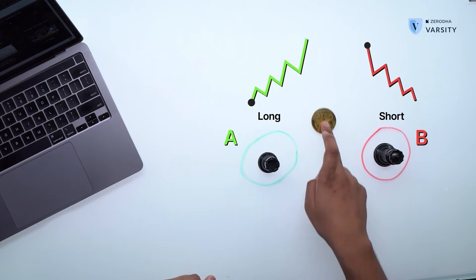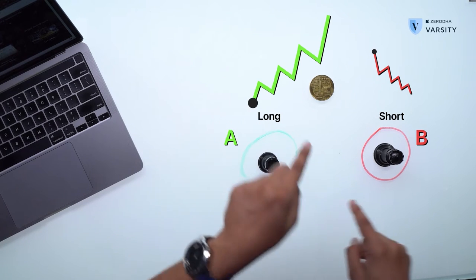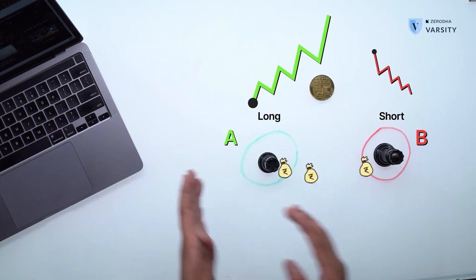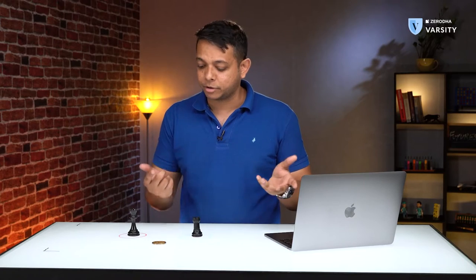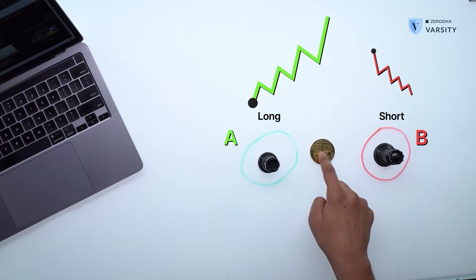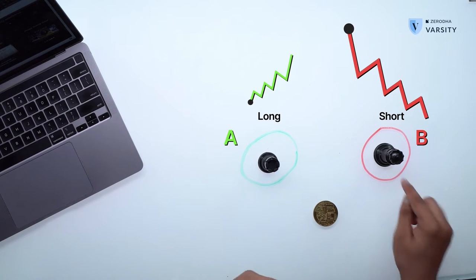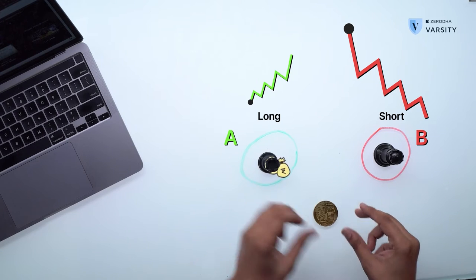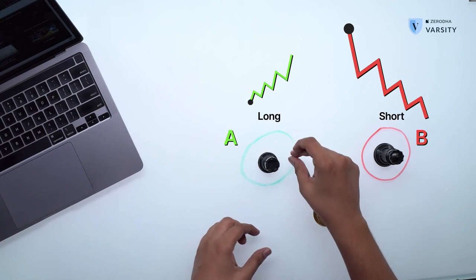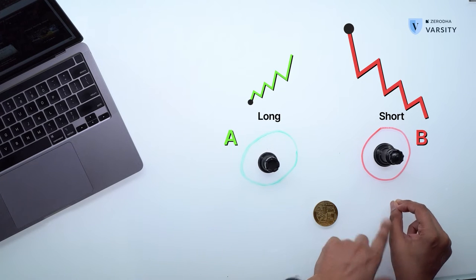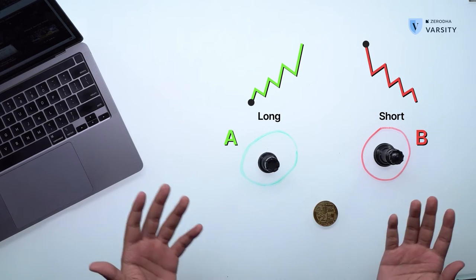So let's suppose the market goes up. Person A makes a profit, but that profit actually comes from person B paying the difference — the mark to market — to person A. That's how he profits. If the market actually fell, then person B who is short actually makes money, and that money comes from person A's mark to market. He's losing money and that is person B's profit. So basically, both of them are on opposite sides of the coin.